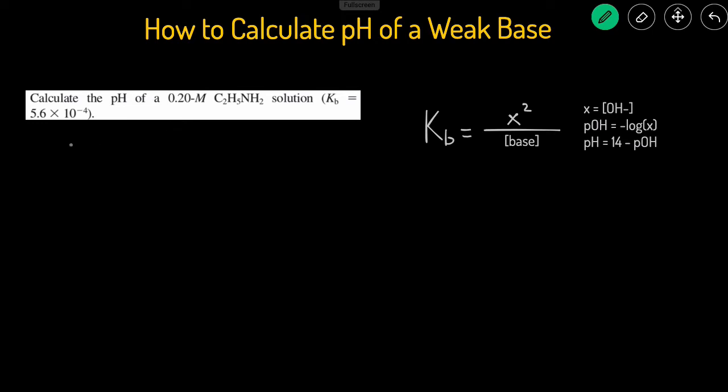Let's see how that applies to this problem. So let's start off by setting up the Kb, 5.6 times 10 to negative 4, and that's going to equal x squared divided by the concentration of the base, which in this case is 0.20. Concentration is just molarity.